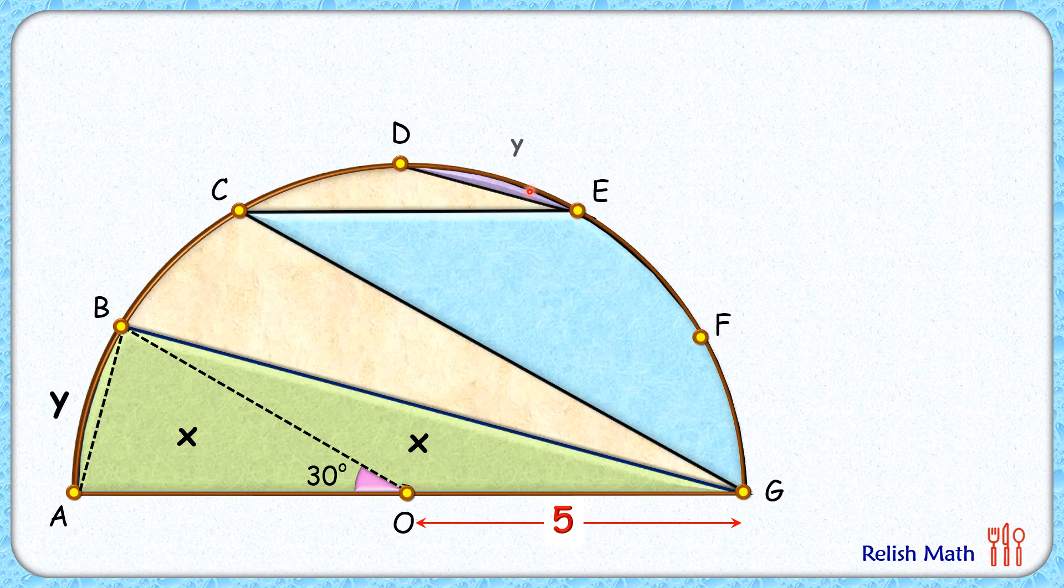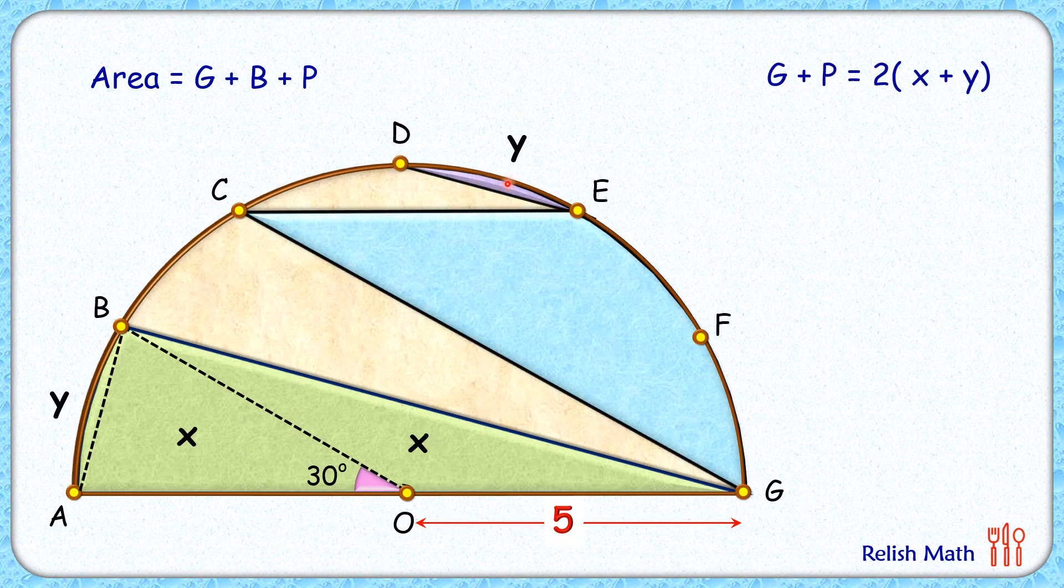Now the total shaded area which we have to find is nothing but green area plus blue area plus this purple area, out of which green plus purple area is x plus x plus y plus y, or two times x plus y. But if you look carefully here, x plus y is nothing but the area of this sector with angle 30 degrees.